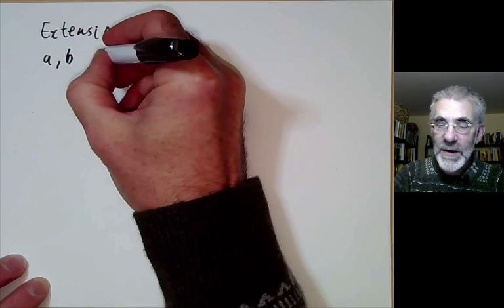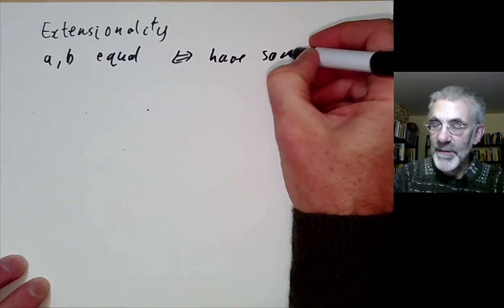So what this says is that two sets A and B are equal if and only if they have the same elements.